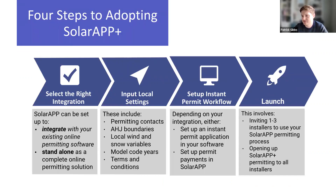If moving forward with adoption interests you, here's what that process looks like. It is a four-step process. First, select the right model of SolarAPP for your jurisdiction — either integration or standalone. The next step is to input local settings such as permitting context, wind speed, snow load, temperature variables, and model code years. Next would be to set up an instant workflow: for the standalone model, this includes setting up permit payments using Stripe; for the integration model, you set up an instant workflow in your government software. Finally, launch by inviting one to three installers to use SolarAPP for permitting and running a pilot, then opening SolarAPP to all installers in your area.